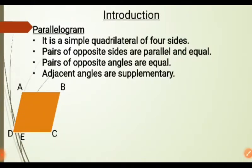The next property says that pairs of opposite angles are equal. That means angle A will be equal to angle C, and angle B will be equal to angle D.